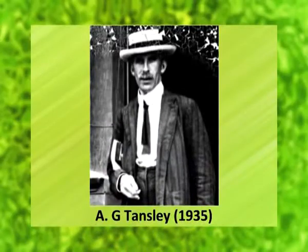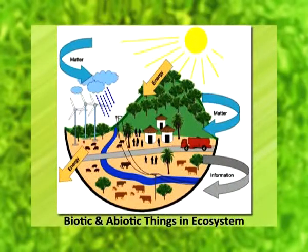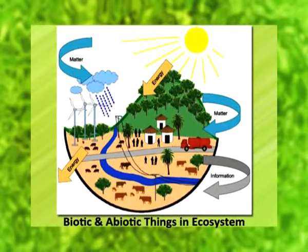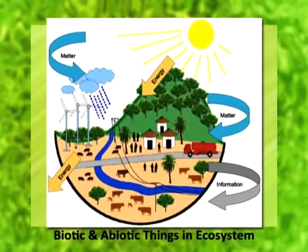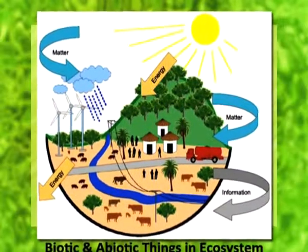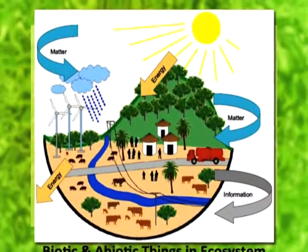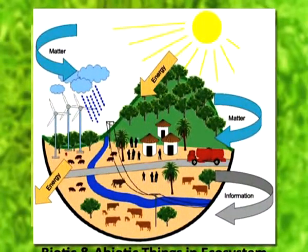The term ecosystem was proposed by British ecologist A.G. Tansley in 1935. Tansley considered ecosystem as a basic functional unit of ecology, which includes both biotic communities, mutually related with their non-living and abiotic environment.